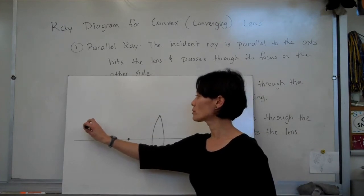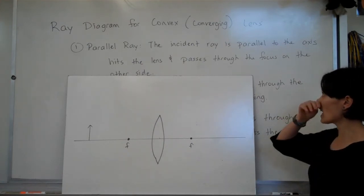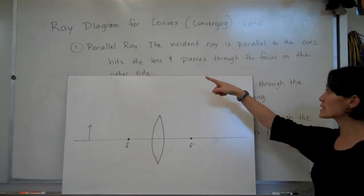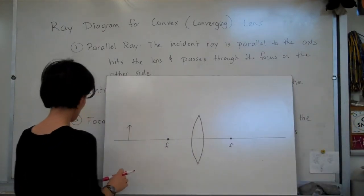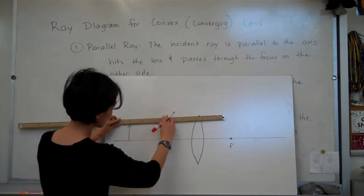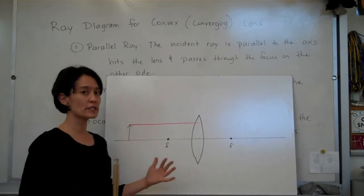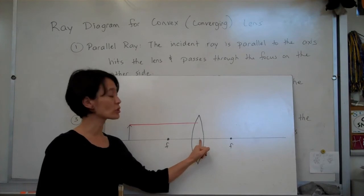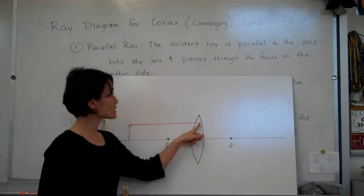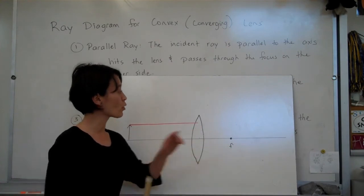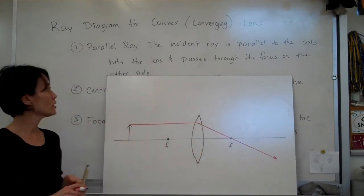We're going to have an object and model the three different rays. Starting with the parallel ray: the incident ray is parallel to the axis, hits the lens, and passes through the focus on the other side. For a lens, you always take the ray to the very center point of your lens — even though bending occurs immediately when it hits the lens, for drawing purposes we go to that center point — and then have it pass through the focal point.